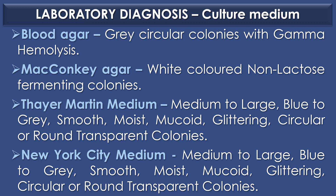There are two selective media for Neisseria meningitidis: Thayer Martin medium and New York City medium. In Thayer Martin medium, the colony morphology of Neisseria meningitidis is medium to large, blue to gray, smooth, moist, mucoid, glistening, circular or round transparent colonies. In Thayer Martin medium, Thayer and Martin used vancomycin, colistin, and nystatin, and Martin and Leicester added the additional antibiotic trimethoprim to make the medium selective.